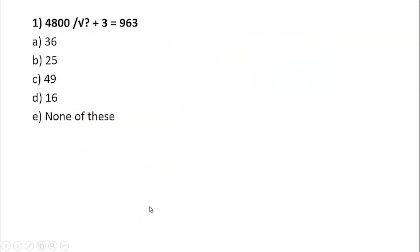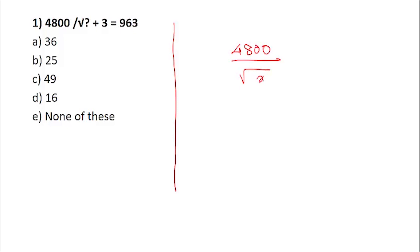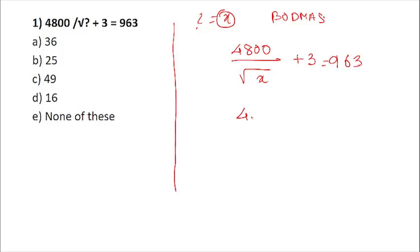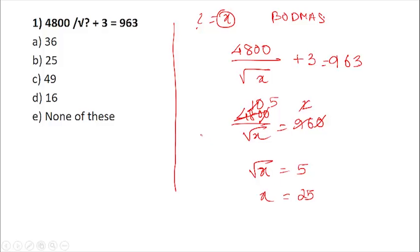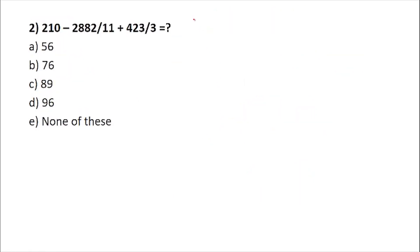Please pause the video and try to solve the next problem on your own. The problem is: this much divided by x plus 3. We have to find the value of x — assume the question mark to be x. According to BODMAS, transfer the 3 to the other side: 4800 divided by 4x equals 960. Cancel and simplify: 48 goes for 10 times, 2 times, then 5 times — so the square root of x equals 5, meaning x = 25. The answer is option B.